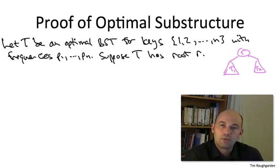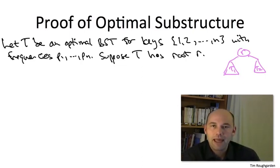We're going to proceed by contradiction. We're going to assume that's not true. That means for one of these two subproblems, either 1 through r-1 or r+1 through n, there's a binary search tree with even smaller weighted search cost than T1 or T2 respectively.